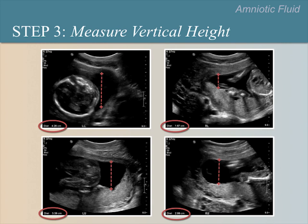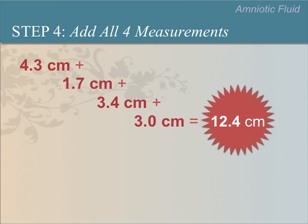Step 3 is to measure the vertical height of each pocket. Note the calipers in the image and the vertical direction — straight up and down — of the measurements. Finally, add all four measurements together to determine the amniotic fluid index. A normal AFI falls between 5 to 24 centimeters, and the AFI in this patient is normal.